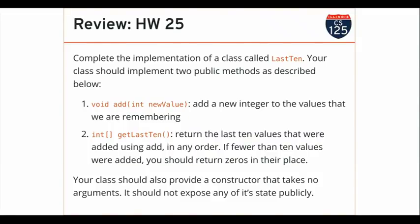Whenever we give you method signatures, there's information there. I see void add int newValue — the method is called add, returns nothing, takes an int. There's also a method that returns a one-dimensional array of integers called getLast10, taking no arguments. What's not present here? There's no constructor — that was left up to you.